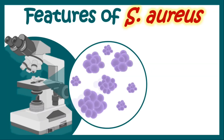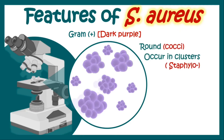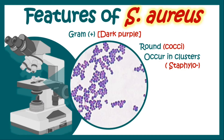Under the microscope, Staphylococcus aureus appears gram-positive, that is dark purple staining. It appears round, hence known as cocci, and occurs in clusters that look like a cluster of grapes — that is why it is known as Staphylo. They also show catalase positivity and coagulase positivity.